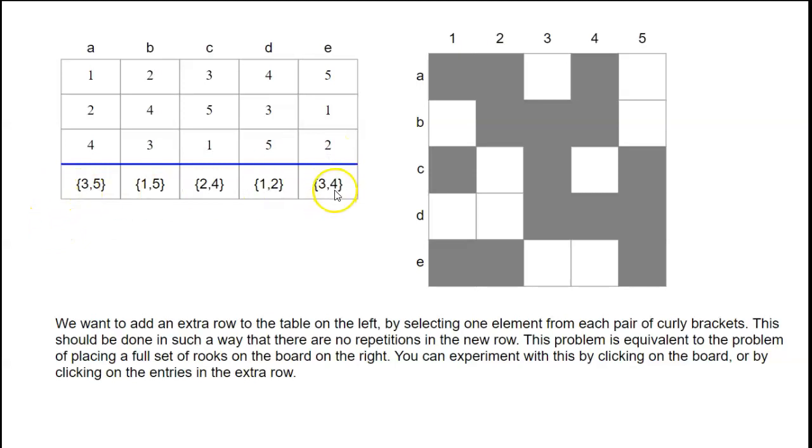And what we want to do is to add an extra row to maintain this property. So in this extra row, every number should appear precisely once, but also we don't want to have any repeats in any column, even after we've made this extension.